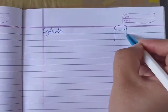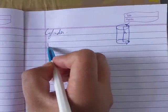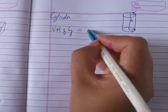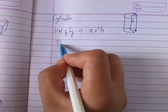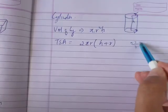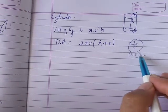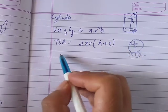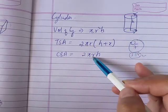Cylinder has height and radius. Volume is pi r squared h. You can use 22 upon 7 or 3.14 for pi. Total surface area is 2 pi r times h plus r. Curved surface area is 2 pi r h.